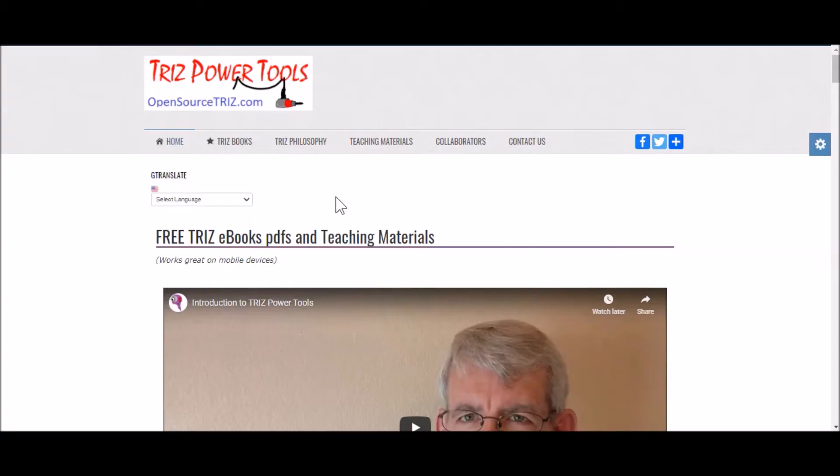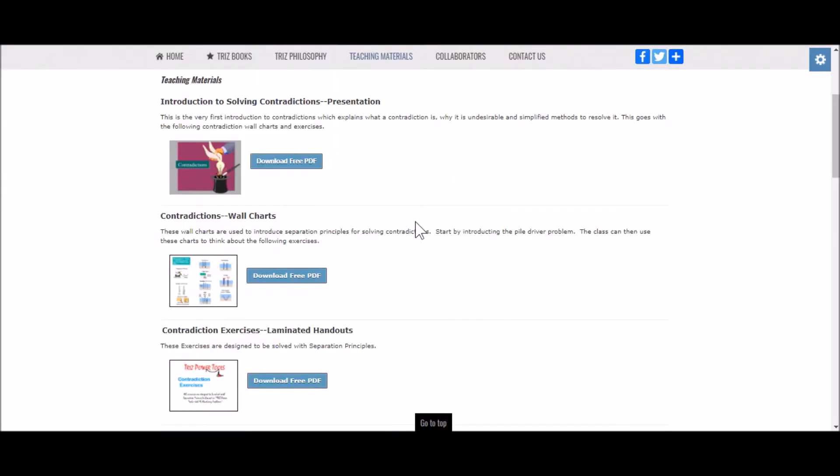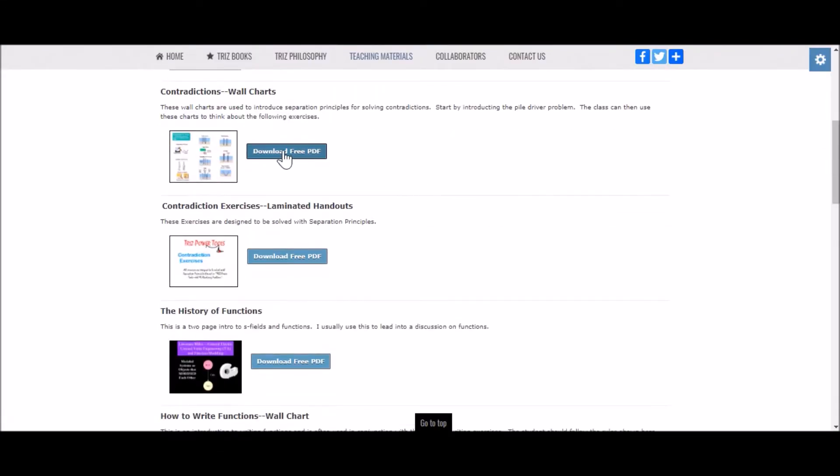I'm using this material directly from the teaching material found at opensourcetrees.com to show you how to do the presentation. In order to get to this presentation, go to the teaching materials tab found at opensourcetrees.com and then scroll down to the second file and download the free PDF contradiction wall charts.